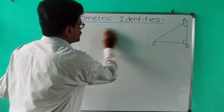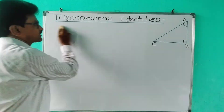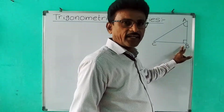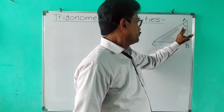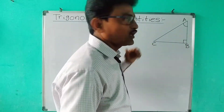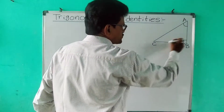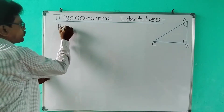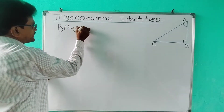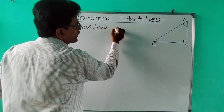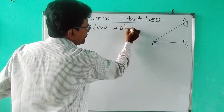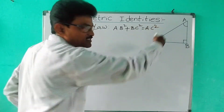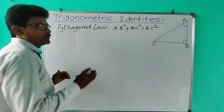Now we will use Pythagoras' law to derive all these trigonometric identities. Consider a right-angle triangle with angle B equal to 90 degrees. With respect to angle A, we write: AB² + BC² = AC², where AC is the hypotenuse. This is Pythagoras' theorem.